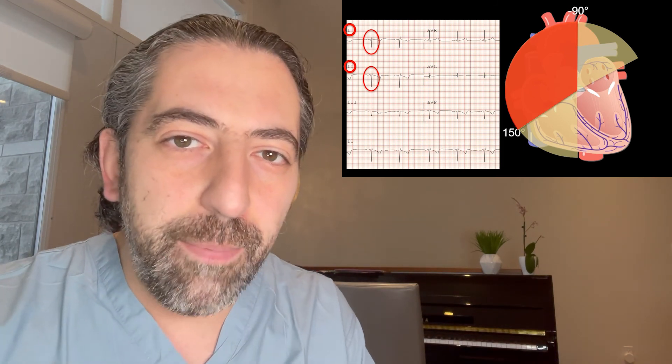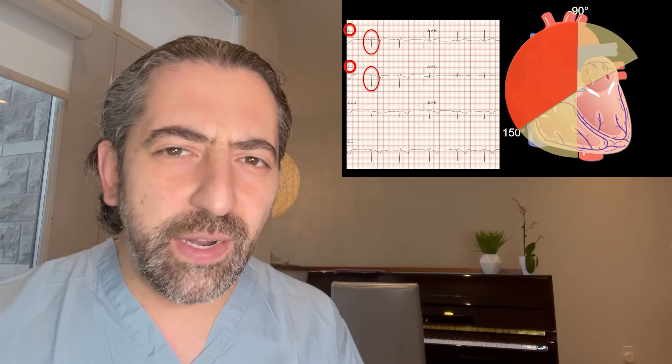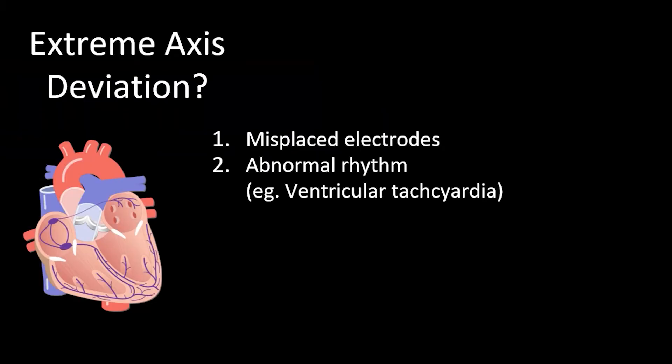How can that happen? It's very unlikely. Things that can cause extreme axis deviation include lead misplacement, where the leads were switched around on the body such that the axis appears abnormal and one should check the leads, or it could be an abnormal rhythm such as ventricular tachycardia, where the signals are actually coming from the bottom of the ventricles.